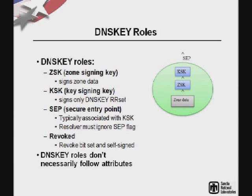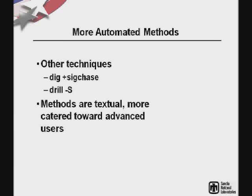One difficulty is that there are attributes associated with DNS keys that in the real world don't always follow the typical case — such as a single zone signing key, a key signing key, and a SEP. Even in the case of revocation, the revoke bit may be set but not necessarily self-signed, which per RFC 5011 means it isn't fully validated as revoked. There are other tools — extensions built into DIG, SIGCHASE, and DRILL — that are good and very powerful but also textual and more catered towards advanced users.